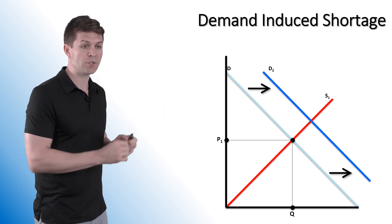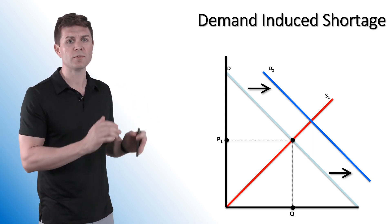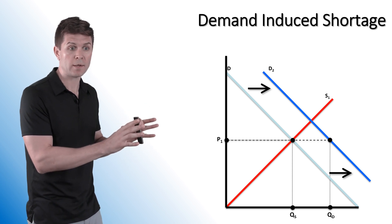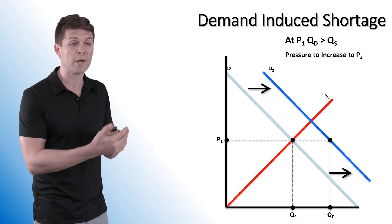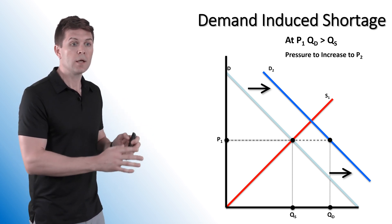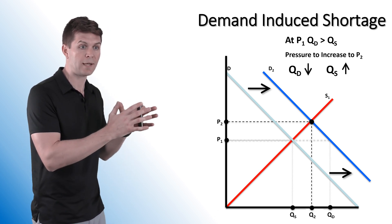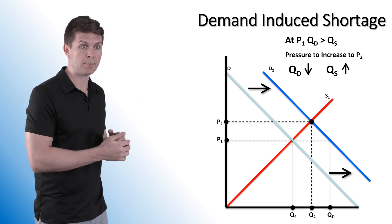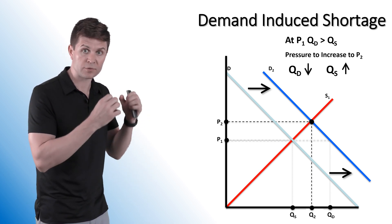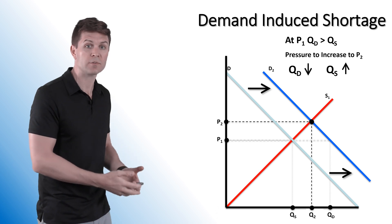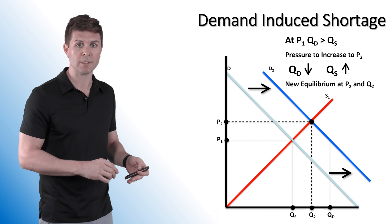Let's imagine this again. Demand shifts to the right, but let's say retailers and producers don't increase their price quite yet — we're still sitting at P1. That means we have a quantity demanded that is greater than quantity supplied at the old price. So there's going to be pressure to increase the price up to a higher level, establishing at P2. What this does is decrease the quantity demanded; that higher price causes consumers to buy a little bit less and causes producers to want to produce a little bit more, and we establish that new equilibrium at P2.